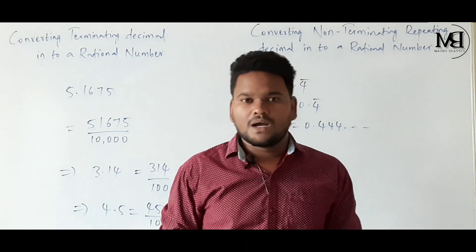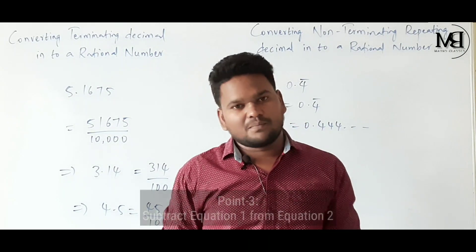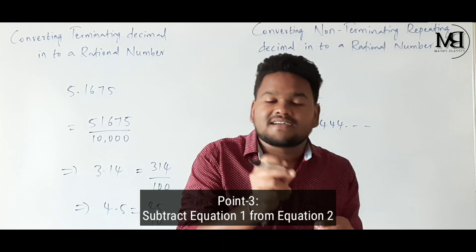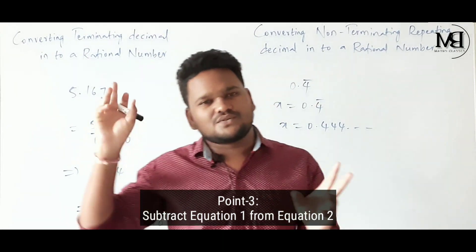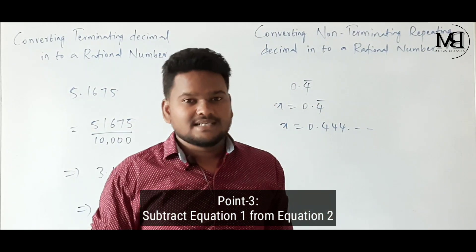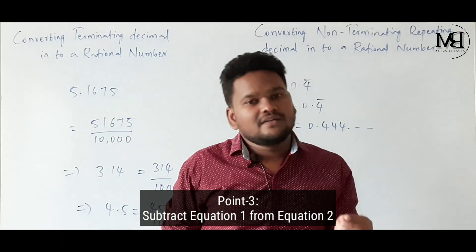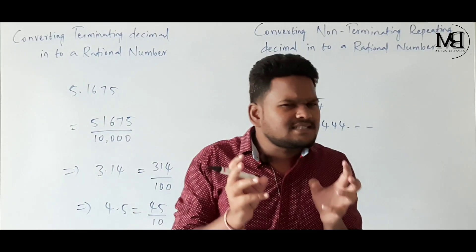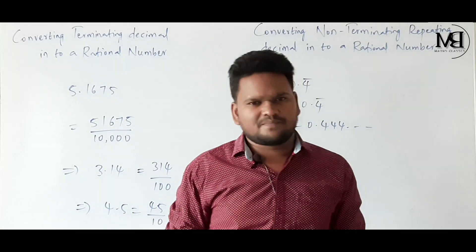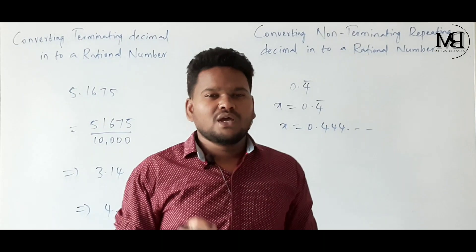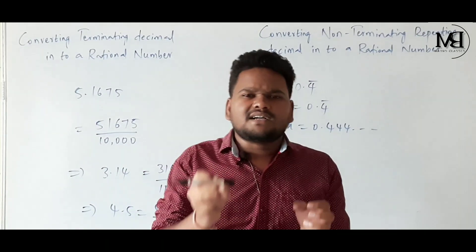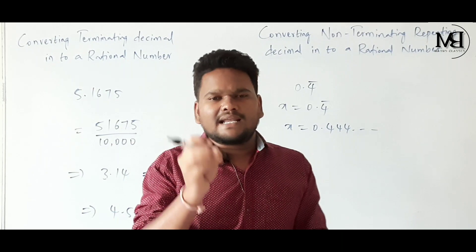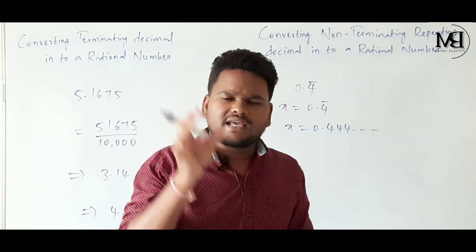Point number 3: subtract equation 1 from equation 2. If you follow these 3 steps, you can convert non-terminating repeating decimal into a rational number easily.